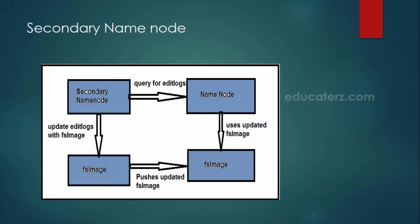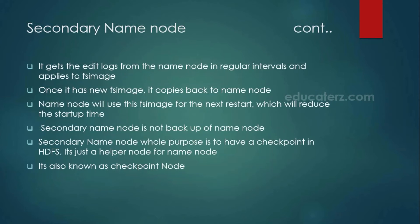This is the purpose of your secondary name node — to perform this checkpoint mechanism, merging your edit logs with the FS image on regular intervals. Do not think that the secondary name node works as your primary name node whenever your name node goes down. No, it doesn't work that way. The whole and sole purpose of the secondary name node is to perform the checkpoint mechanism of merging your edit logs with your FS image.